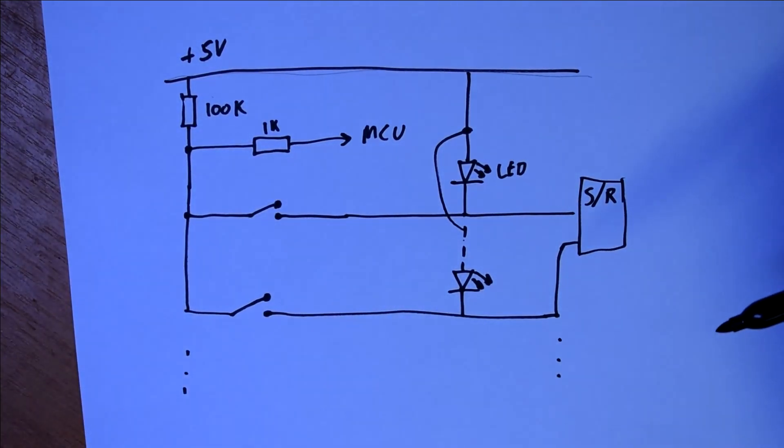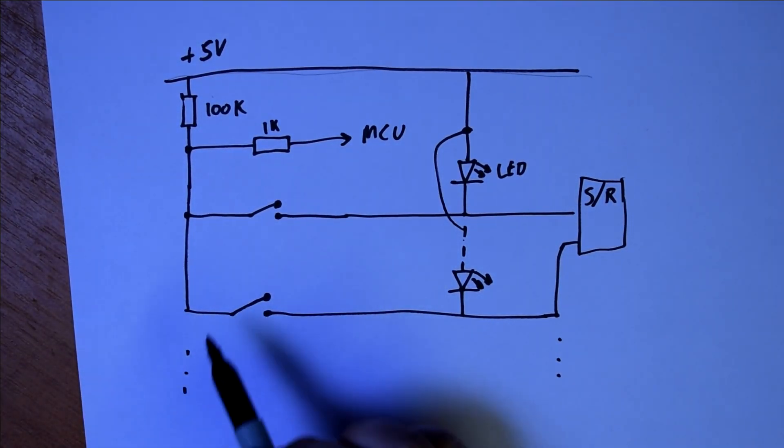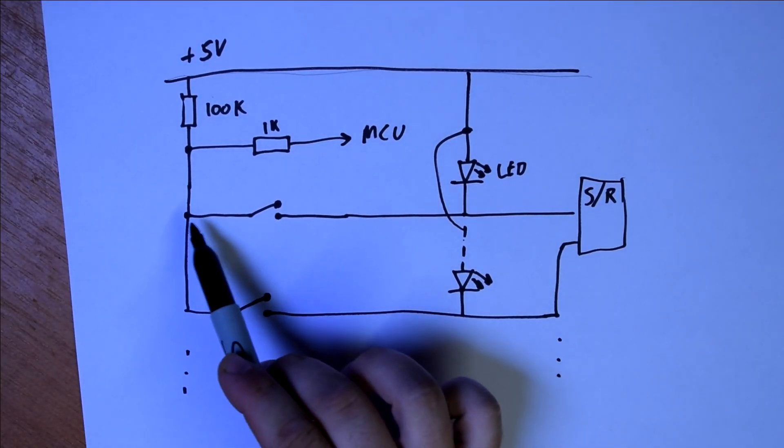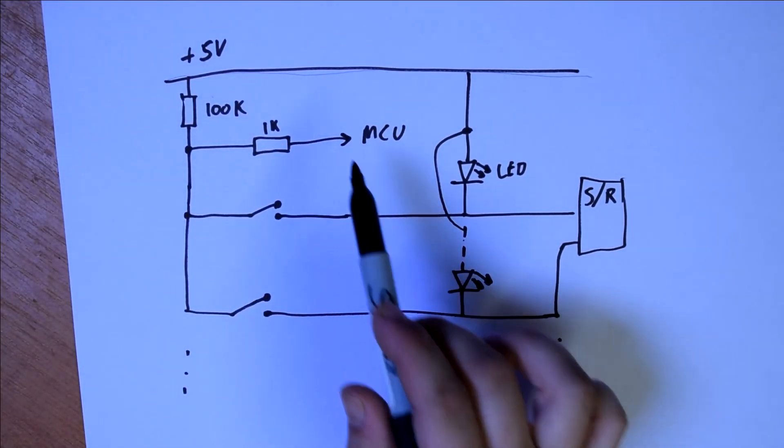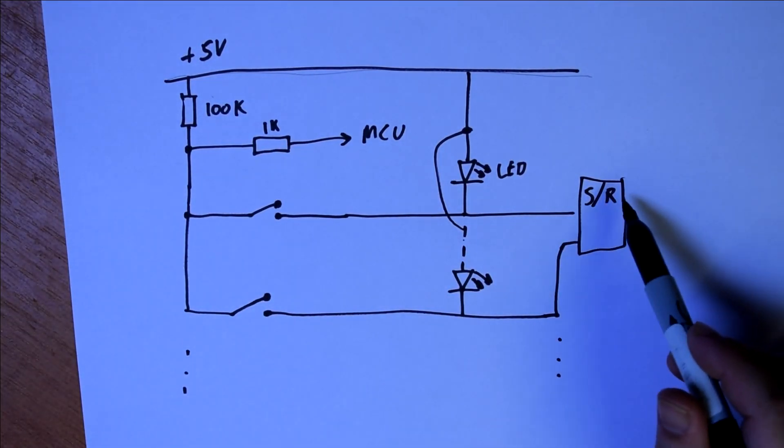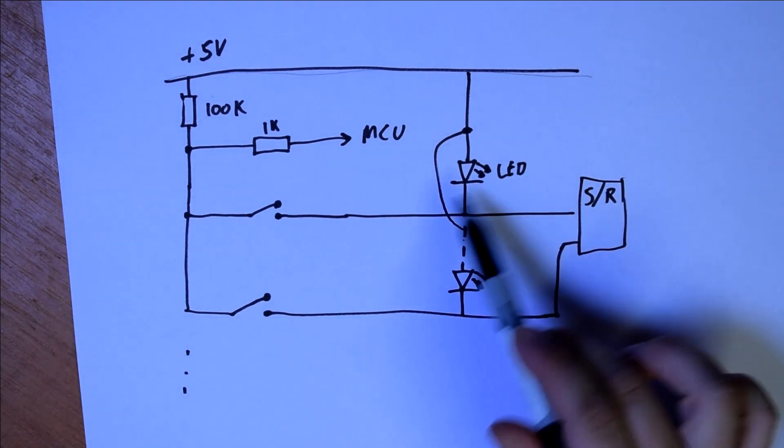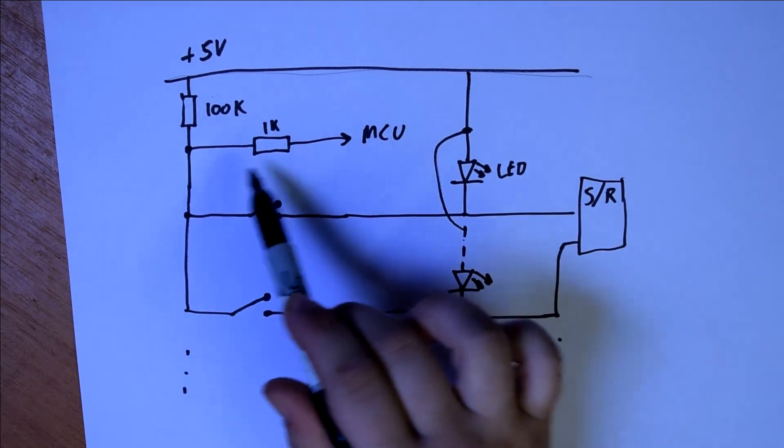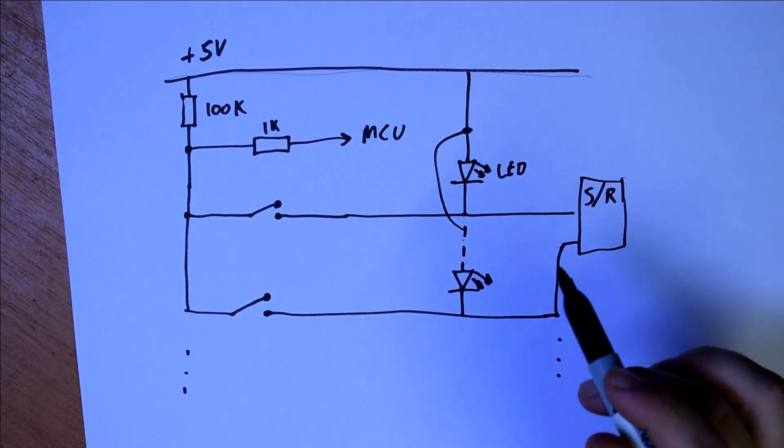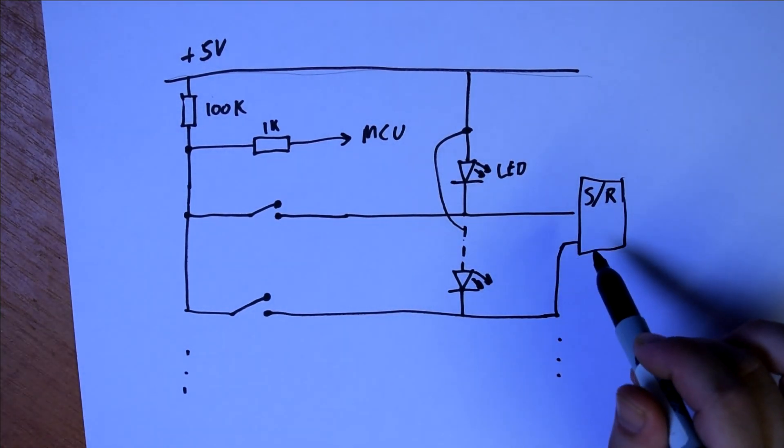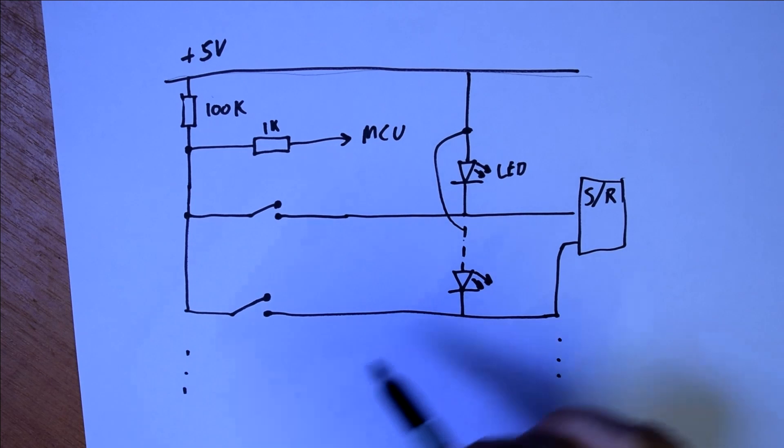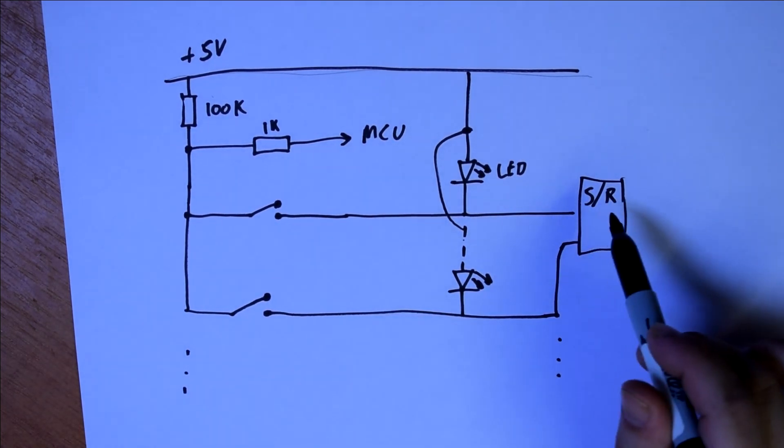If we were to tap into this signal here directly and drag it down manually, we'd have to observe the timing of the shift register, see when the appropriate switch is being scanned, and then quickly pull this down so that it would pick up that that switch is being registered. But we don't really need to do that.